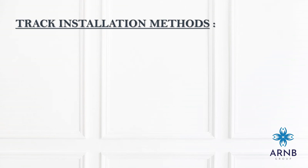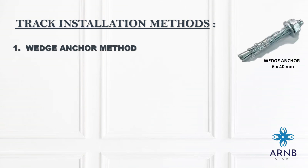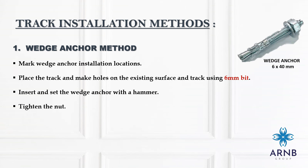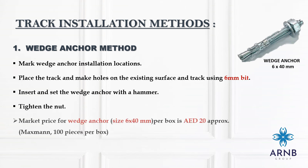There are many methods for installing tracks. We are discussing three commonly used methods. The first is the wedge angle method. The installation procedure starts with marking the wedge angle installation locations, then place the track and make holes on the existing surface and track using a 6 mm bit, insert the wedge angle with a hammer, and finally tighten the nuts. Market price is approximately 20 AED per box with 100 pieces of wedge angle.